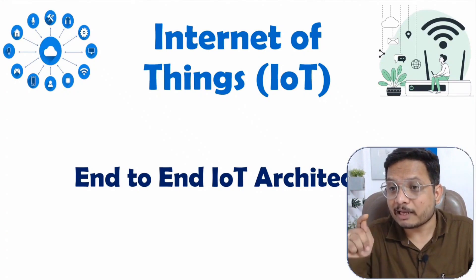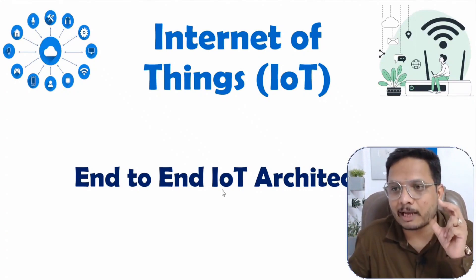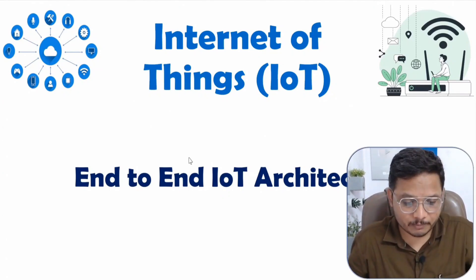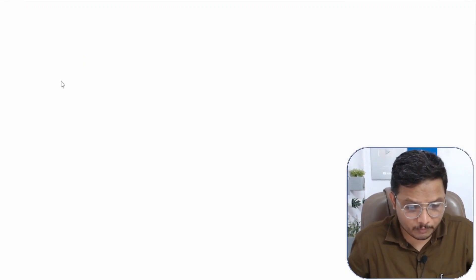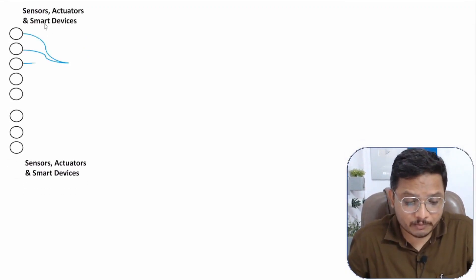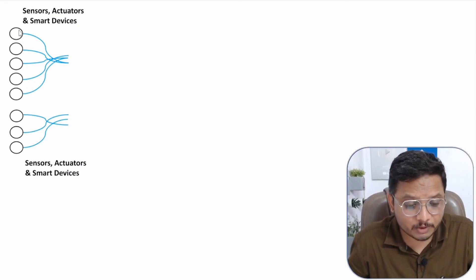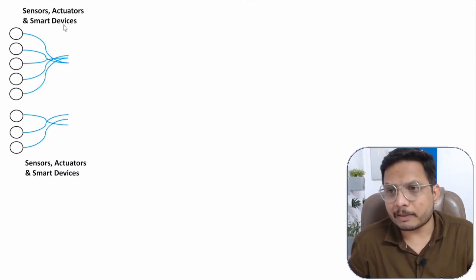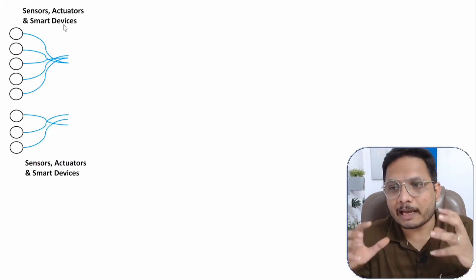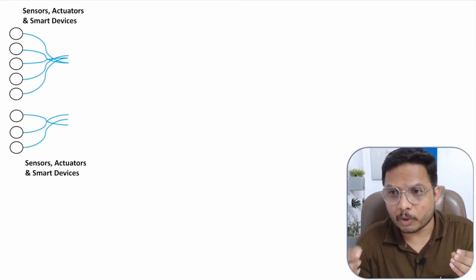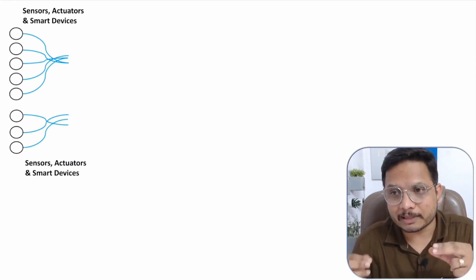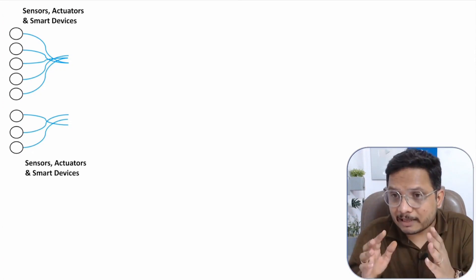Elements of IoT architecture. IoT stands for Internet of Things, which is why the term starts with 'things.' Things means there will be devices that function as nodes. These devices include sensors, actuators, and smart devices. Sensors are used to detect physical entities such as temperature, moisture, and sound — various physical entities can be sensed.